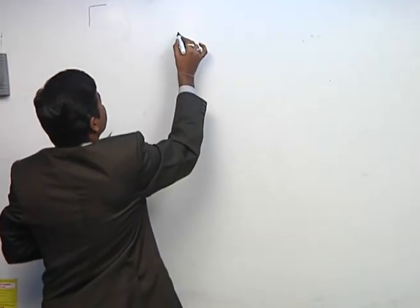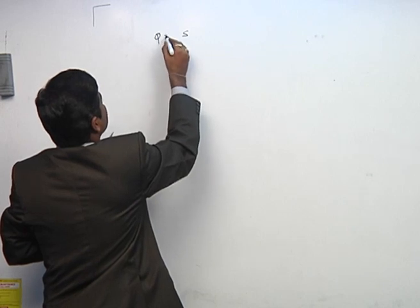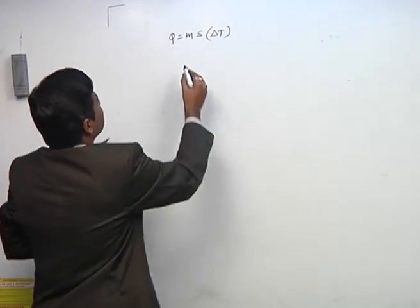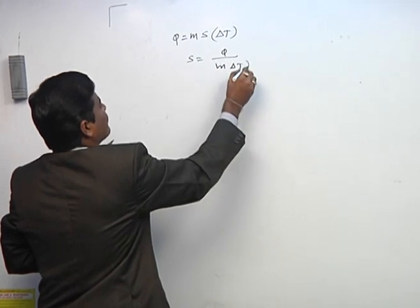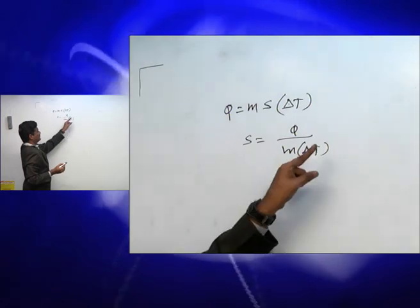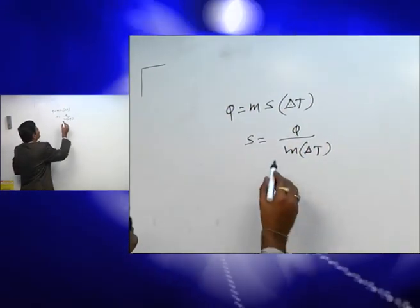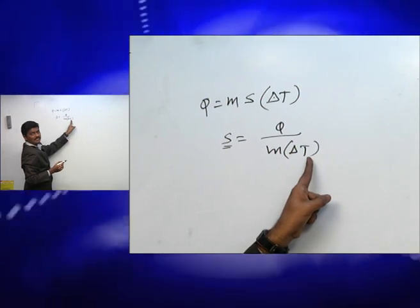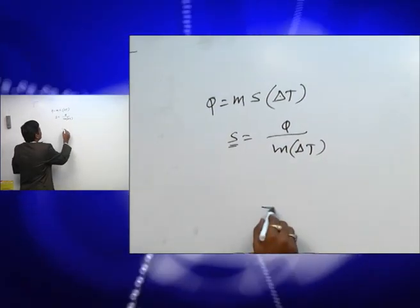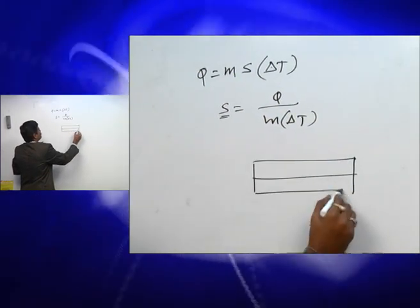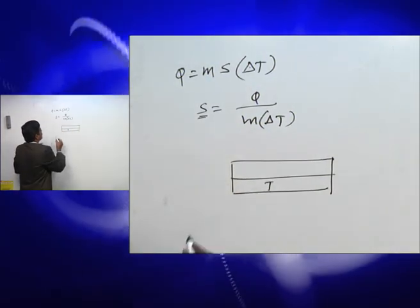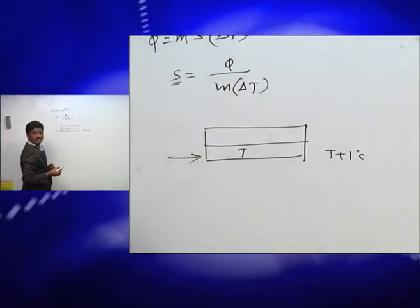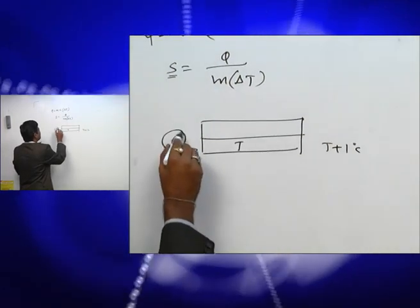For specific heat, Q equals M times S times delta T, and S equals Q divided by M times delta T when S is constant. If S varies with temperature, we use the integration form. Specific heat is defined as the amount of heat required per unit mass to raise its temperature by 1 degree centigrade.